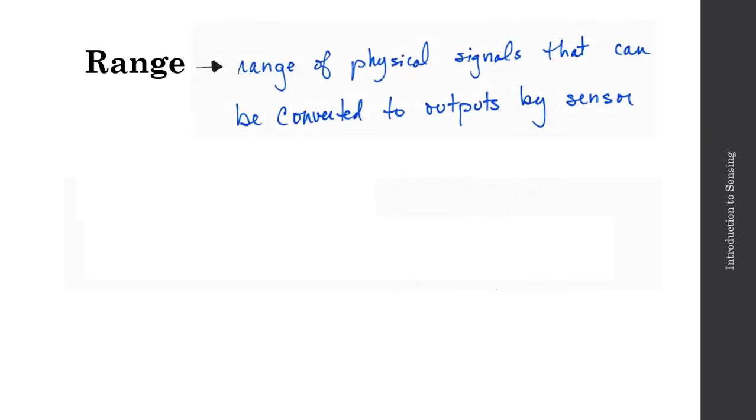And so the range we need to define. The range will be defined as the range of physical signals that can be converted to outputs by the sensor. And oftentimes we're referring to an input range. So Rin, my input range, is defined as the maximum input signal that we can measure minus the minimum input signal that can be measured by the sensor.